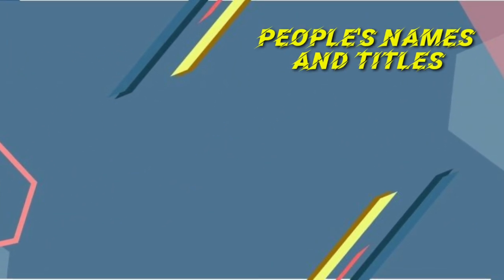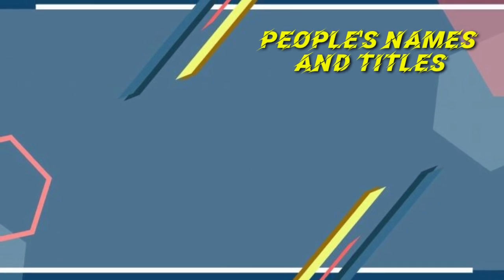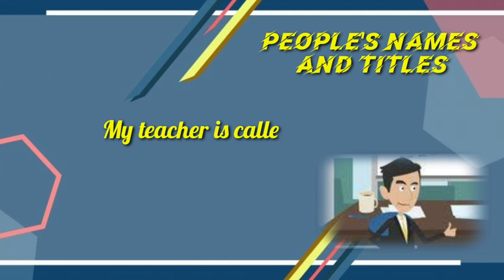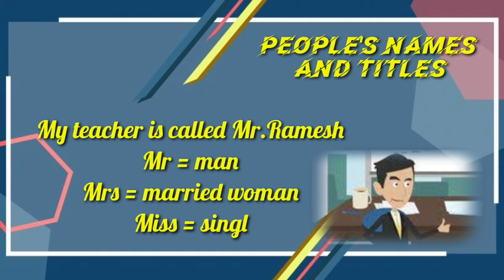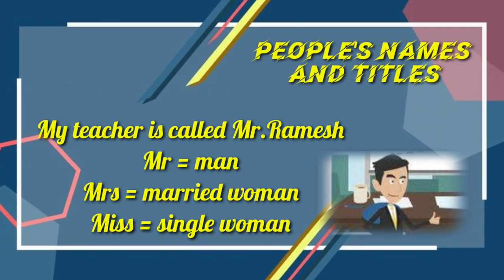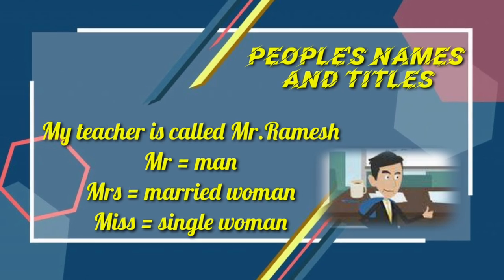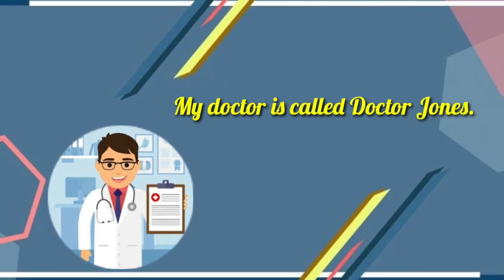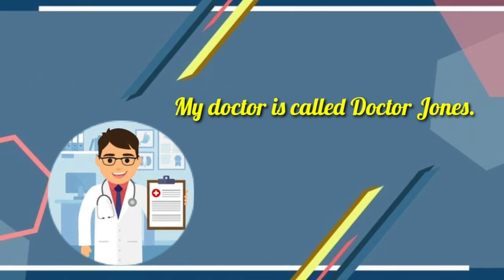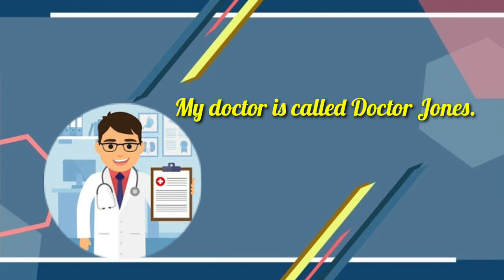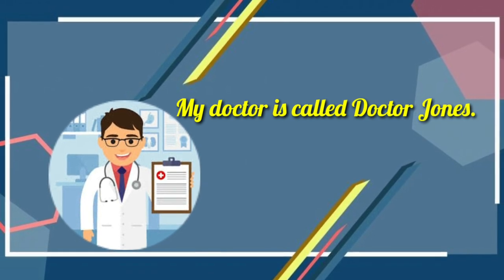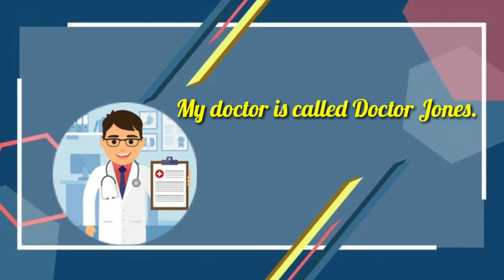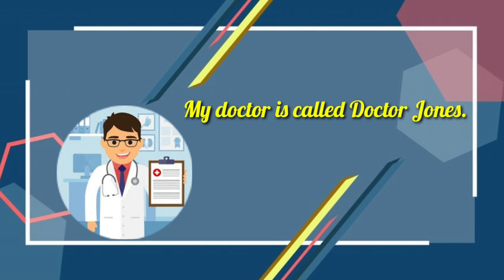Rule seven: people's names and titles. This is a very common use of capital letters. Example: 'My teacher is called Mr. Ramesh.' The titles Mr. for men, Mrs. for married women, and Miss for single women all use capital letters. Example: 'My doctor is called Dr. Jones.' Doctor is used as a title here, so it takes a capital D. However, when the word doctor is used as a common noun and not as a title, it is just a lowercase letter.